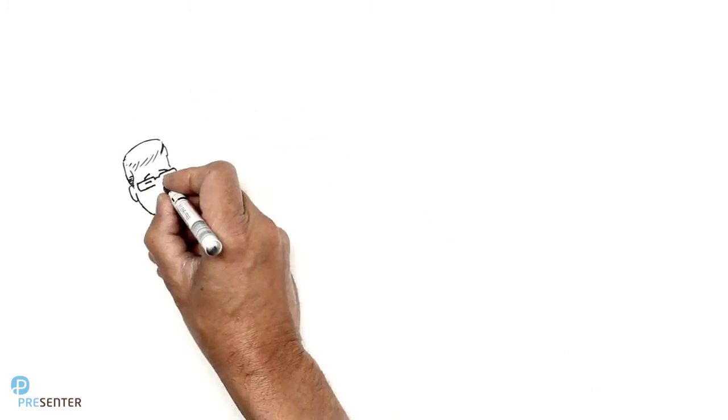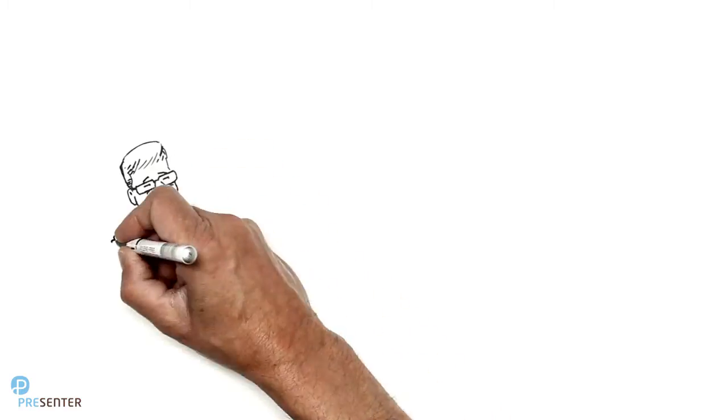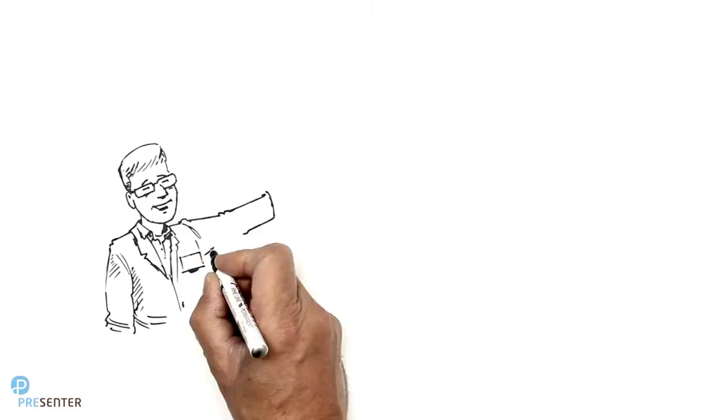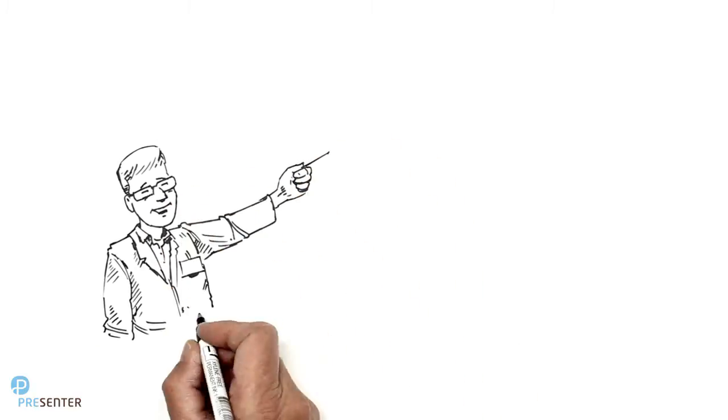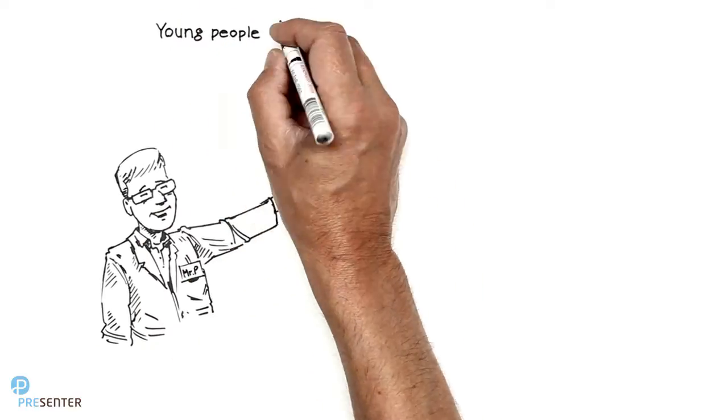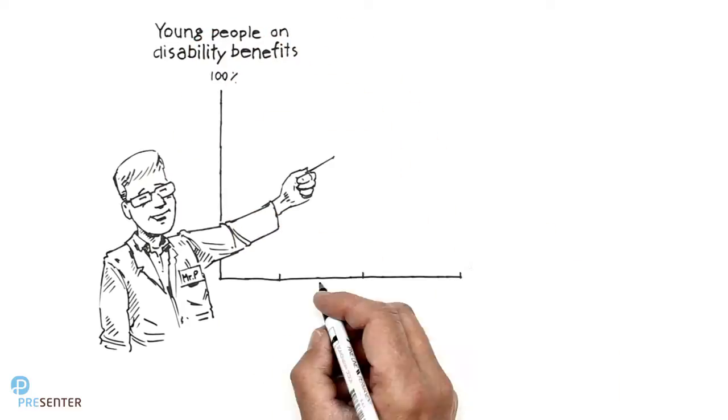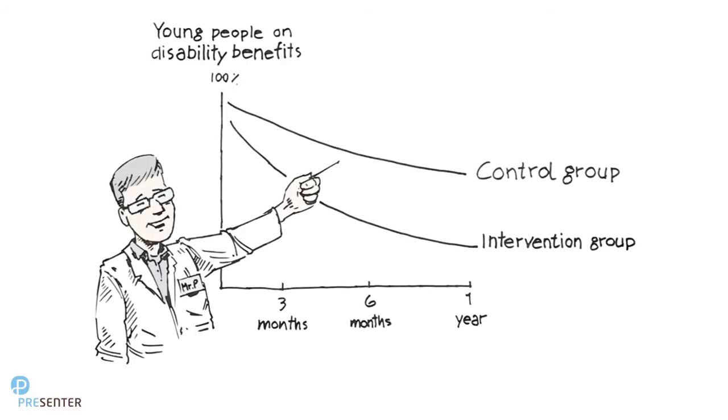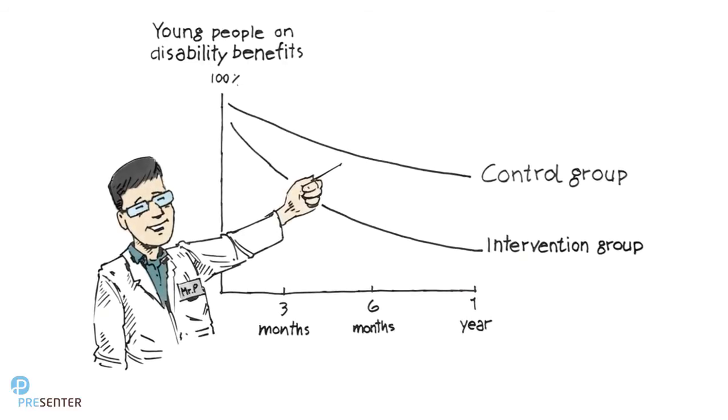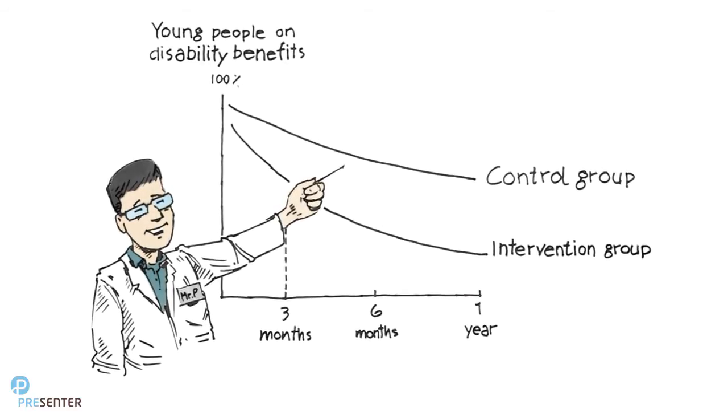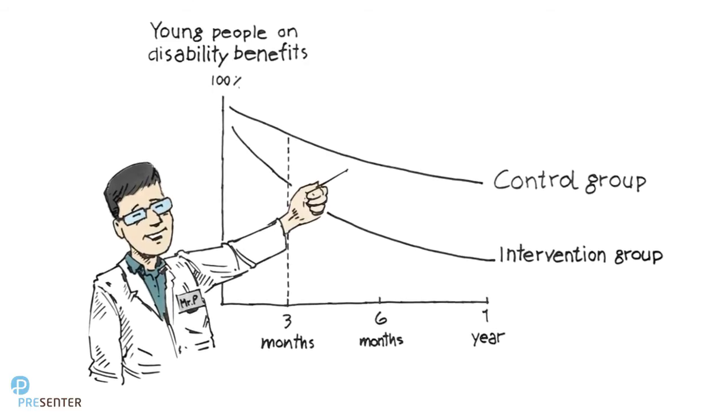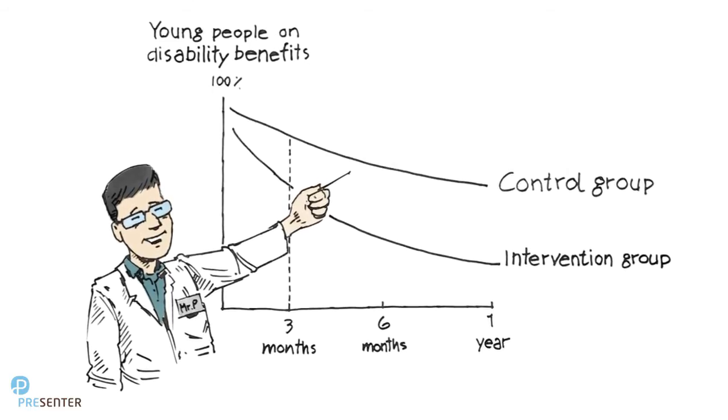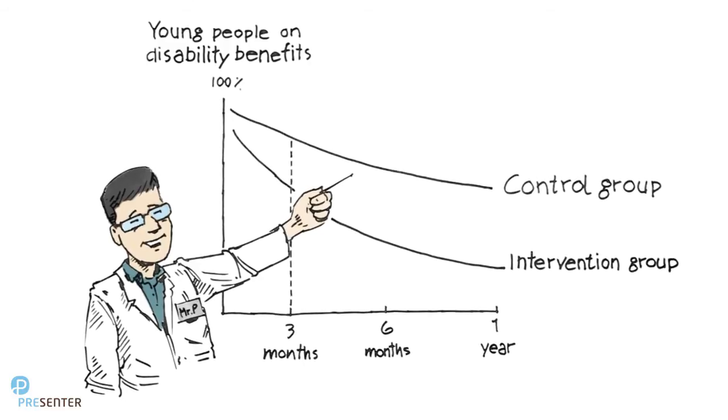After three months, both groups complete the same questionnaire as they received at the baseline measurement. We can now see if more of the participants in the intervention group have returned to work or education, compared to the control group. In this graph, for example, we can see that there are fewer people on disability benefits in the intervention group after three months. This could mean that the intervention has worked better than current practice.